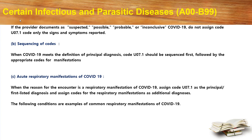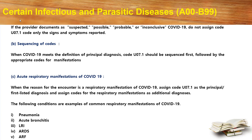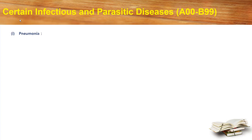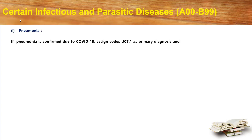The following conditions are examples of common respiratory manifestations of COVID-19: pneumonia, acute bronchitis, LRI (lower respiratory infection), ARDS, and ARF — acute respiratory failure. For pneumonia, if pneumonia is confirmed due to COVID-19, assign code U07.1 as primary diagnosis and J12.89, that is other viral pneumonia, as secondary diagnosis.